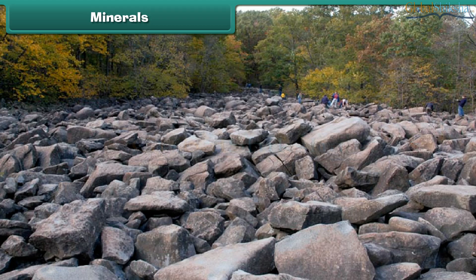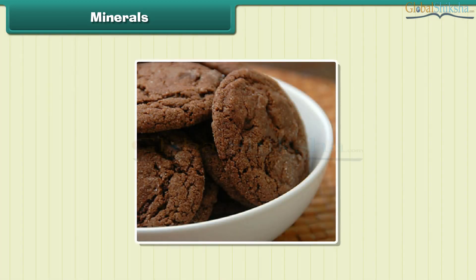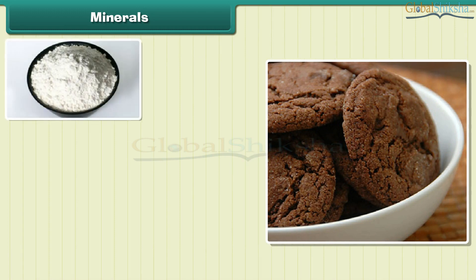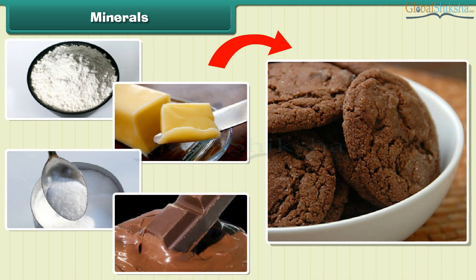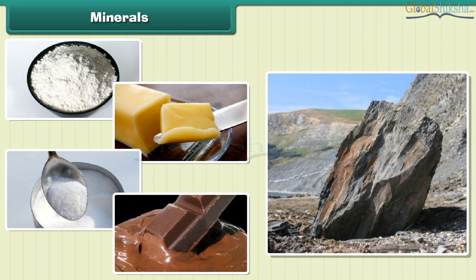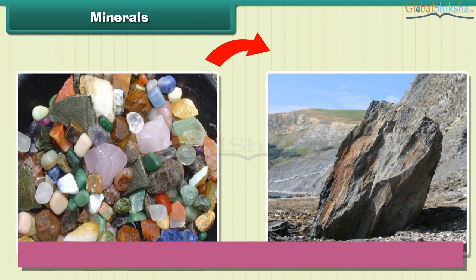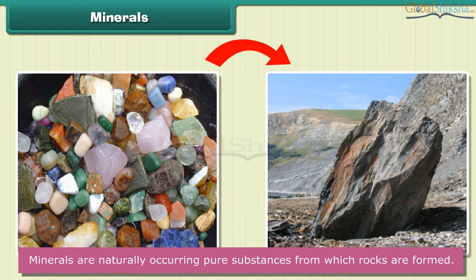We have learned about rocks. All rocks are made of minerals. Think of a chocolate cookie as a rock — the cookie is made of flour, butter, sugar, and chocolate. The cookie is like a rock and the flour, butter, sugar, and chocolate are like minerals. Thus, minerals are naturally occurring pure substances from which rocks are formed.